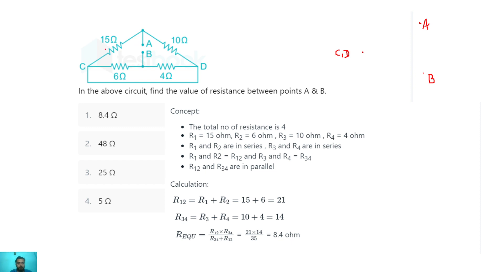From point A to C, a 15 ohm resistor is connected. So we connect this 15 ohm resistor from A to C-D. Again, from point A to D, a 10 ohm resistor is connected. Now from point B to C, a 6 ohm resistor is connected.